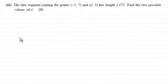Hi there. Now for this question we're given that the line segment joining the points (-2, 7) and (d, 3) has a length of 2√13. And we've got to find the two possible values of d for four marks.